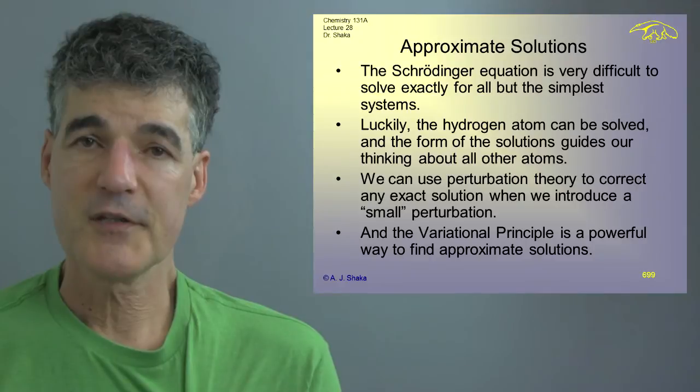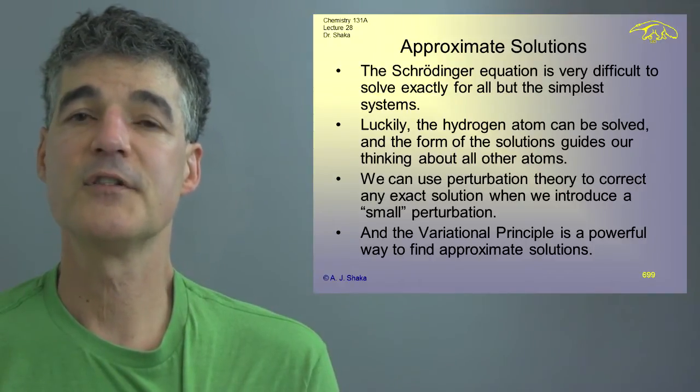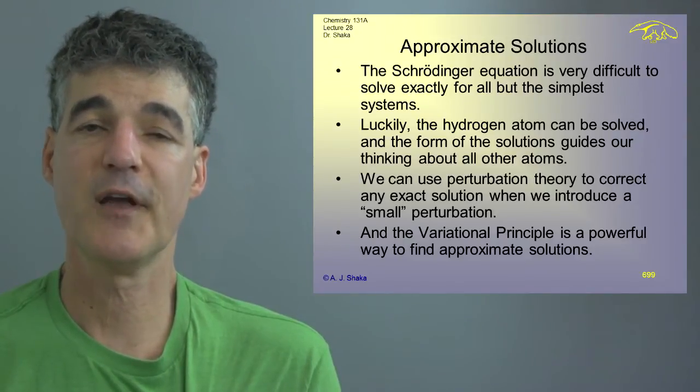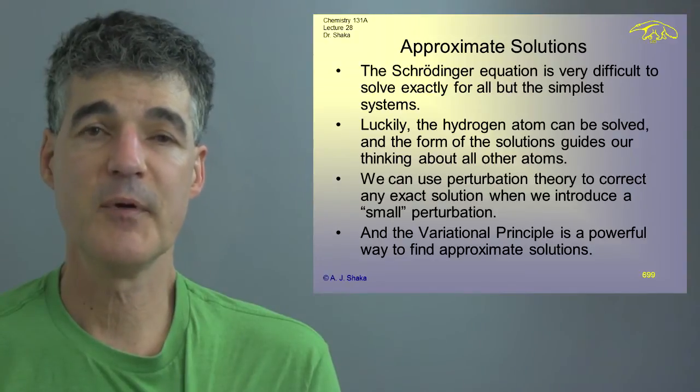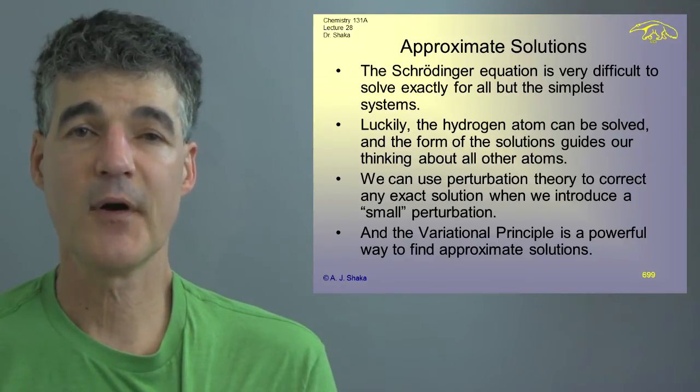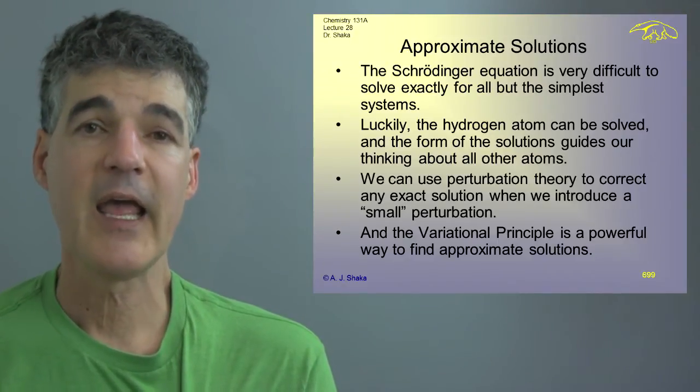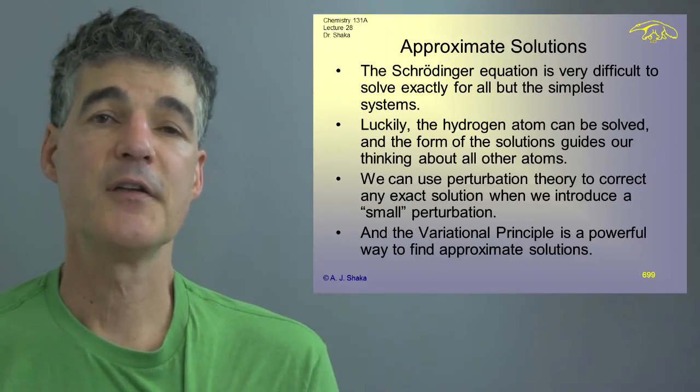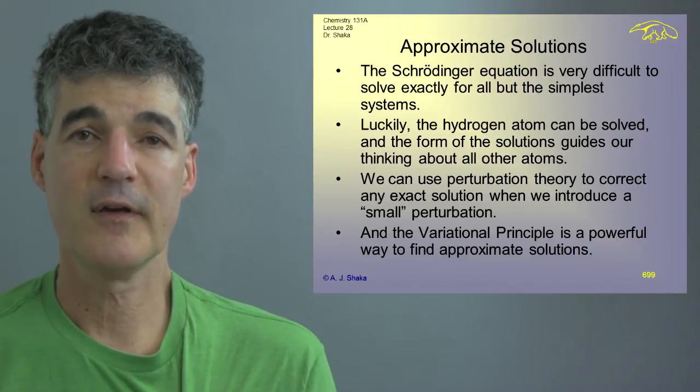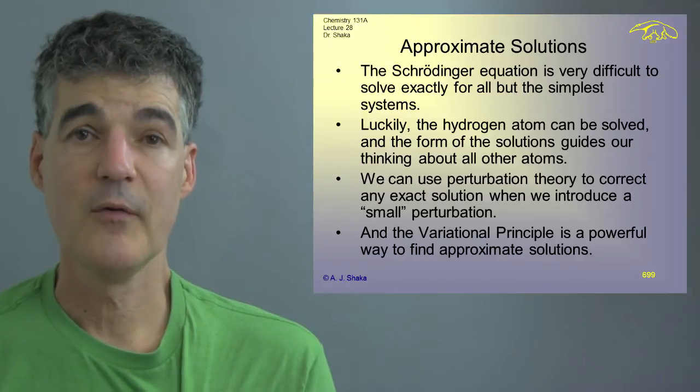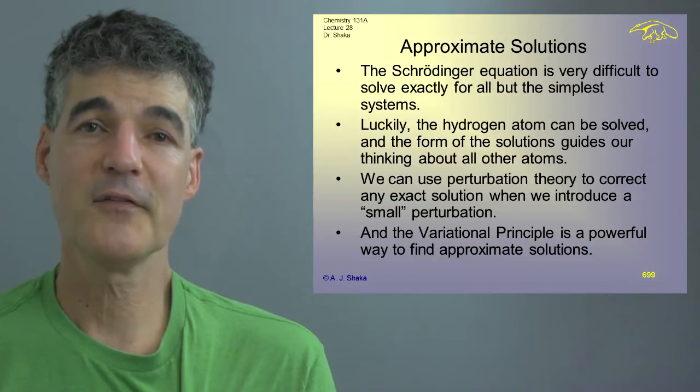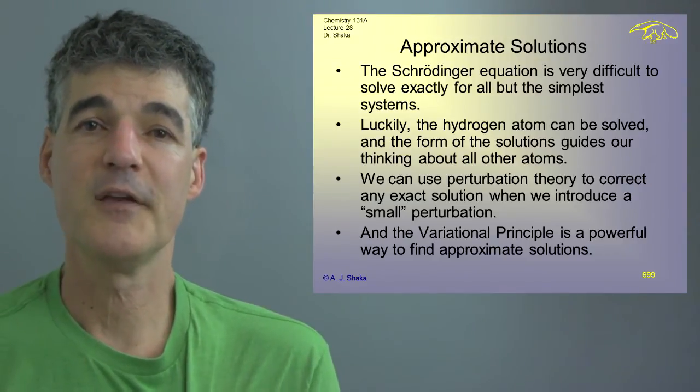We can use perturbation theory then to correct any exact solution as long as we have a small perturbation. But if we have a big perturbation, we have to be careful. And then the other approximate method that's quite important that we used over and over again is to introduce a parameter into the wave function and then optimize the parameter by adjusting it so that the energy is lowered.